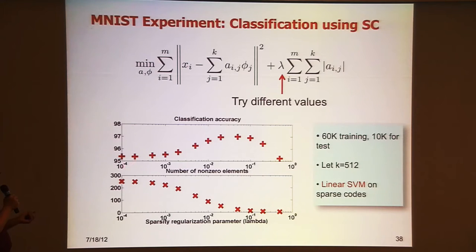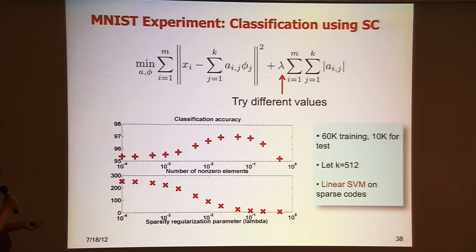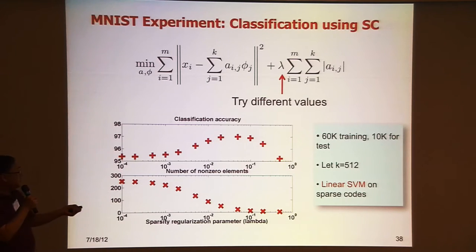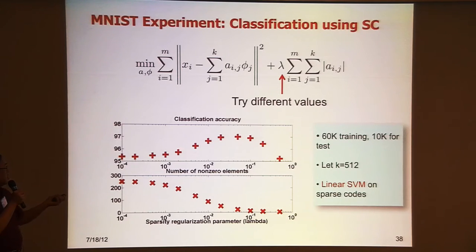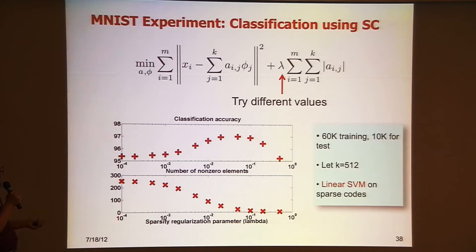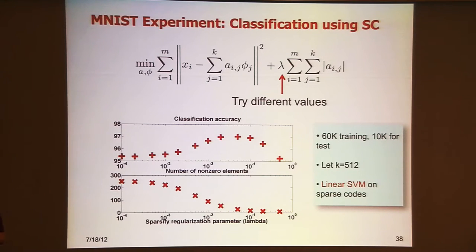In this plot, the horizontal axis shows different values of the regularization parameter, and the vertical axis shows classification accuracy. The other plot shows the sparsity you get — average sparsity. You can see: if you increase the value of the regularization parameter, you first get better and better classification accuracy, then it drops. And with larger lambda, you get sparser and sparser representations.